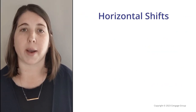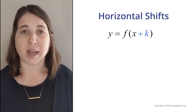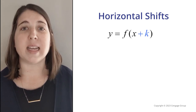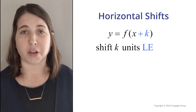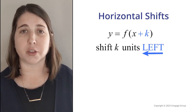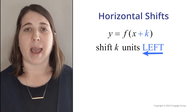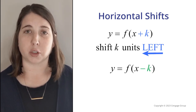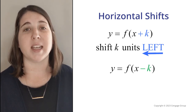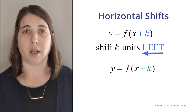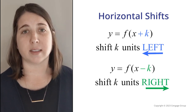Now let's talk about horizontal shifts. If we add a positive number to the input of a function, the graph will shift to the left. And if we subtract a positive number from the input of a function, the graph will shift to the right.